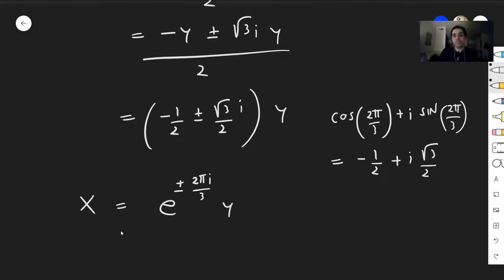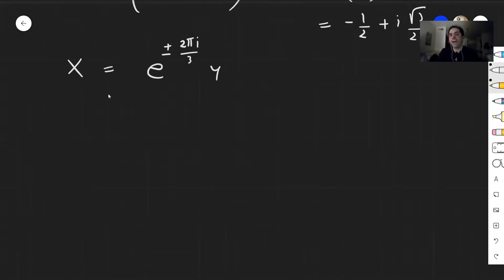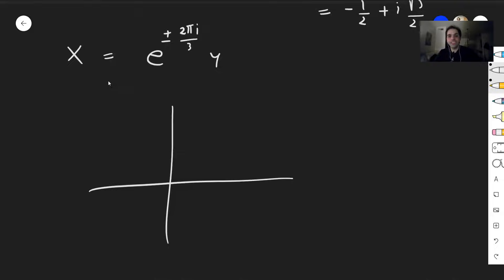So in other words, at least for y real and positive, what do the solutions look like? It's quite an interesting geometry. So if y is here, real and positive, then this angle is zero, but what this is saying is x is on the same circle of radius y, but on an angle of 2 pi over 3, and also an angle of minus 2 pi over 3.